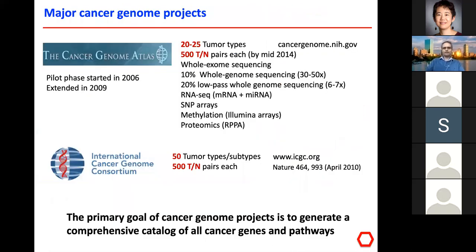Historically, TCGA (The Cancer Genome Atlas) started in 2006 as a national project to characterize cancer genomes, extended in 2009, and essentially ended in 2016. The aim was to study 20–25 tumor types; it eventually covered 33 tumor types. Large cohorts included 500 tumor-normal pairs with whole exome sequencing for all, 10% with whole genome sequencing, 20% with low-pass whole genome sequencing, RNA-seq from mRNA and microRNA, SNP arrays for copy number and germline SNPs, methylation arrays, and proteomics by reverse phase protein arrays.